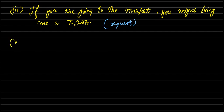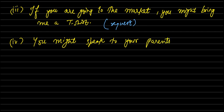You might speak to your parents about it. So what is this sentence saying? You might speak to your parents about it. You can speak to your parents about it. So what is this? Casual command is being given.